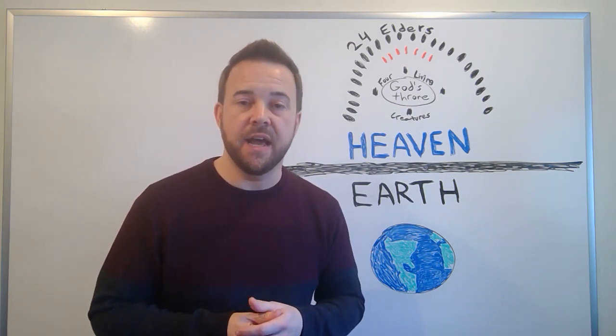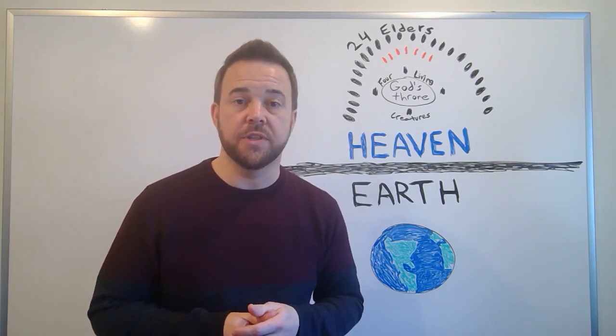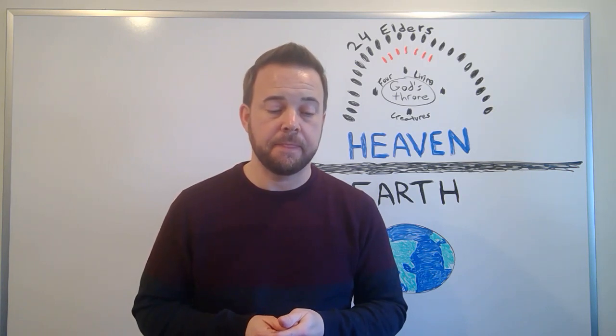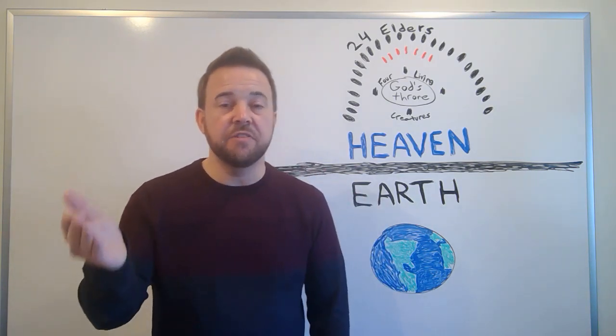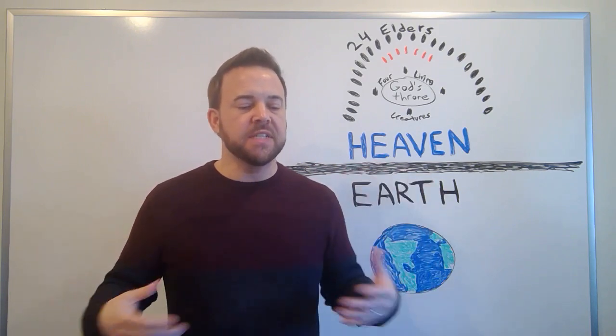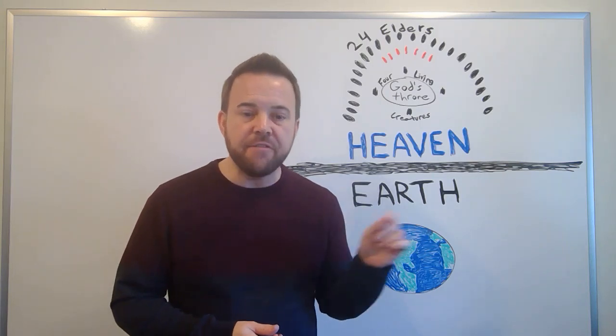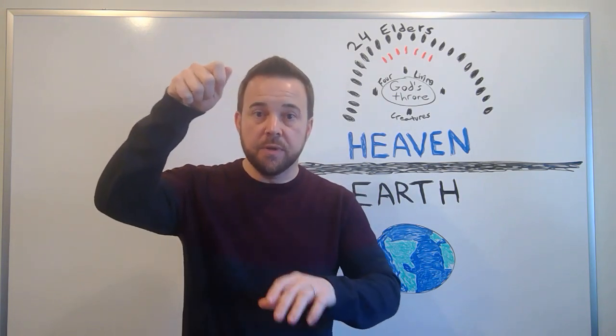And no one, in heaven or on earth or under the earth, was able to open the scroll or look into it. And I began to weep bitterly, because no one was found worthy to open the scroll or to look into it. So, the scroll in the right hand of God contains the word of God, the will of God, God's eternal purposes and decrees for humanity and creation. But it is sealed with seven seals. And the thinking here is that you break one seal, the scroll opens a little bit. You break another, it opens a little bit more, and so on, until you have broken all seven, and then it is all revealed. Now, remember, the number seven represents completeness, wholeness, perfection. So, the seven seals contain the fullness of God's perfect will.